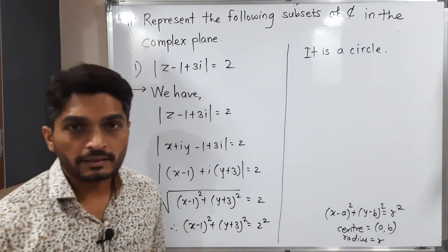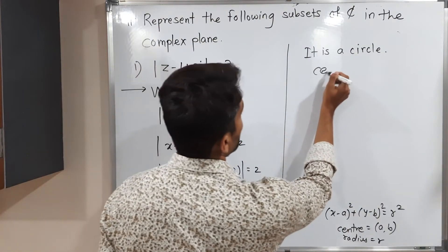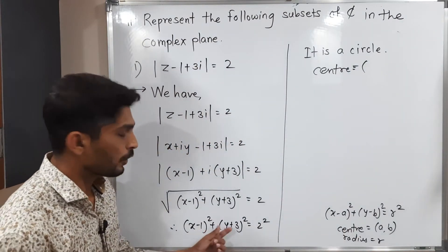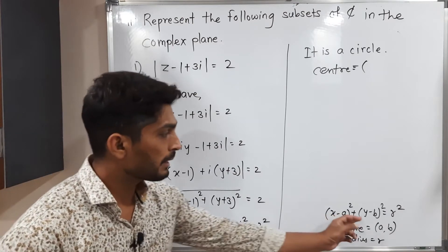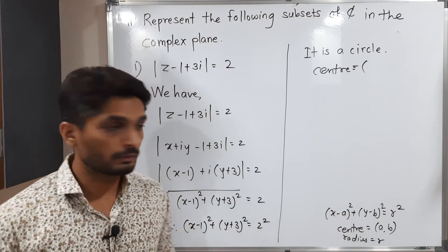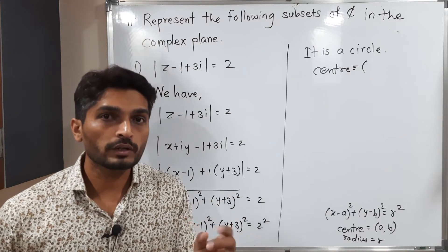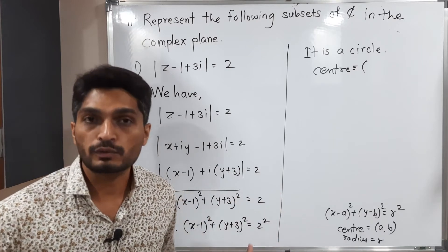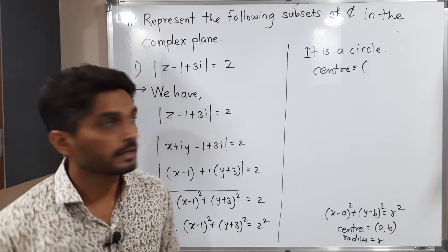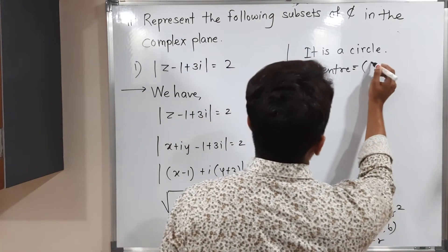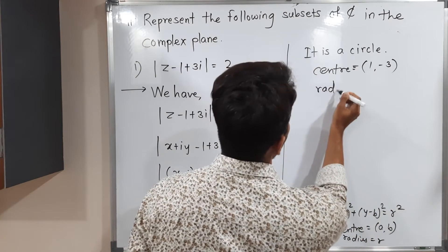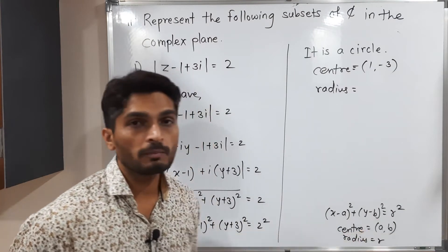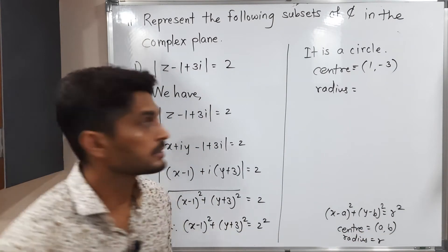Can you tell me its center and radius? The center will be (1, −3). Note that a minus sign should be there in the standard form, but we have a plus sign in (y + 3), which means y − (−3), so the center's y-coordinate is −3. Therefore center is (1, −3). For the radius: we have 2² on the right, and in standard form that is r², so the radius is 2.